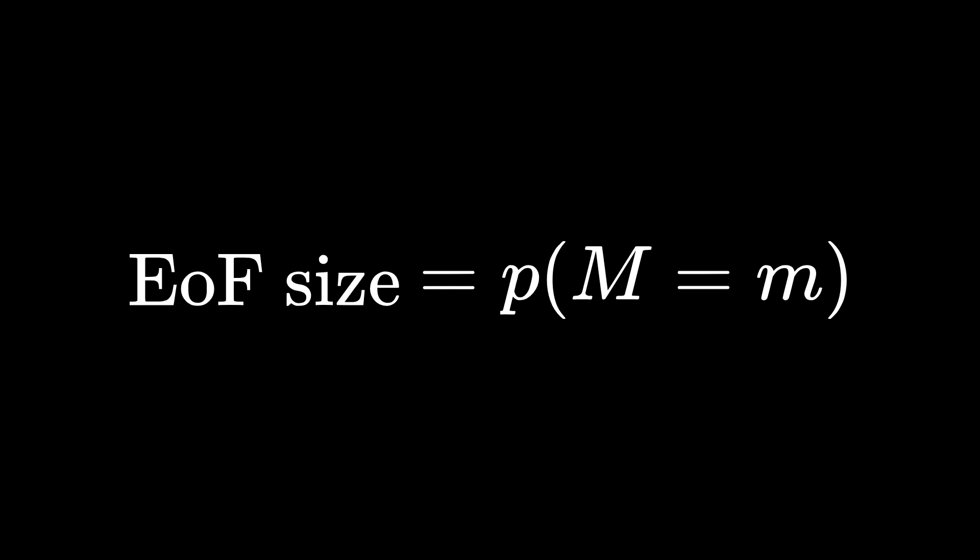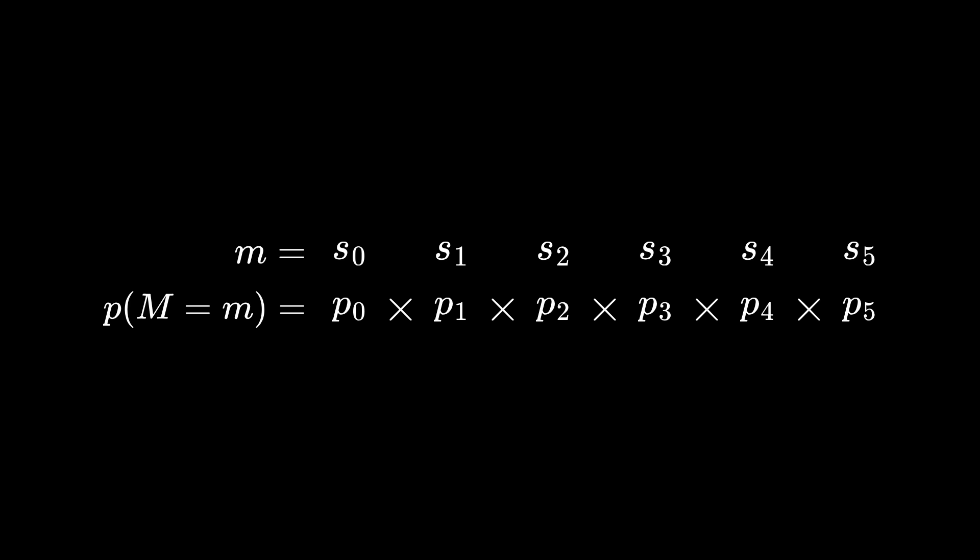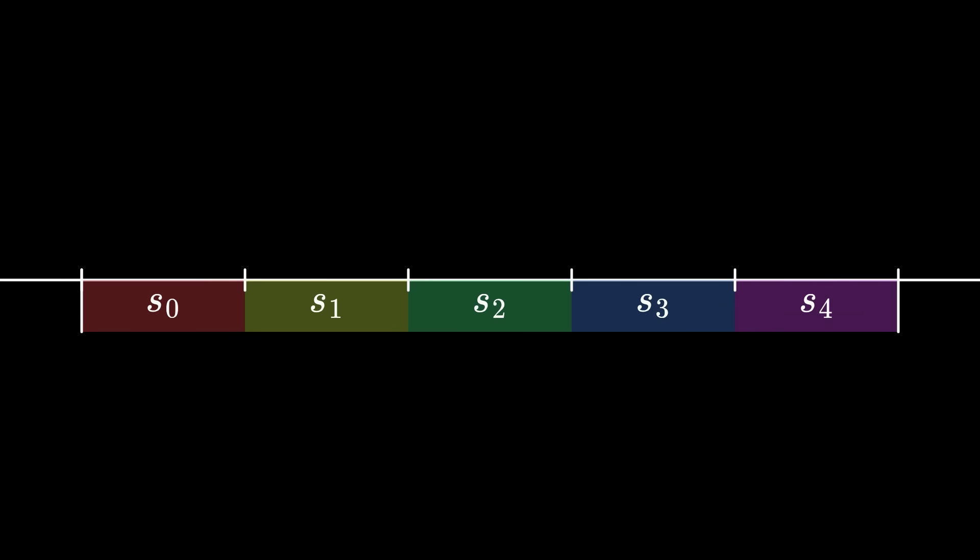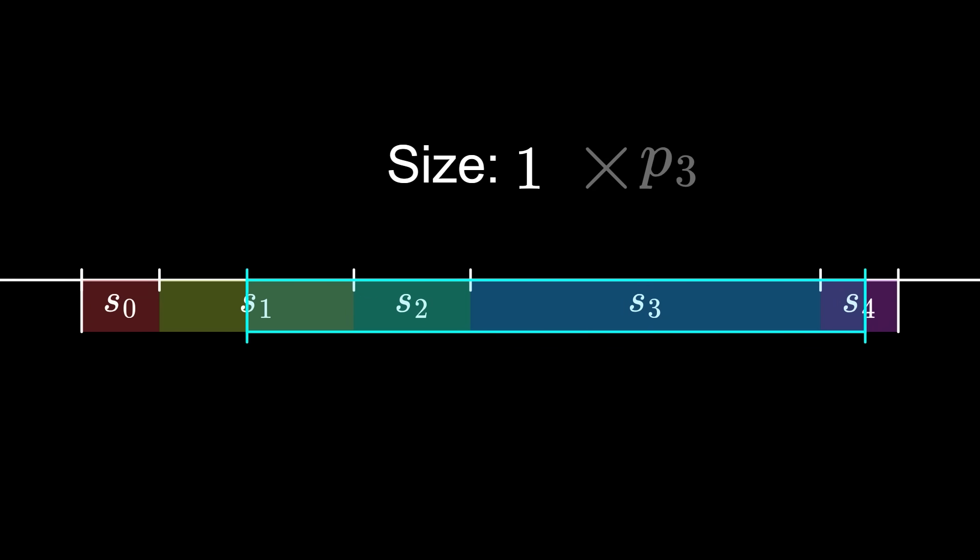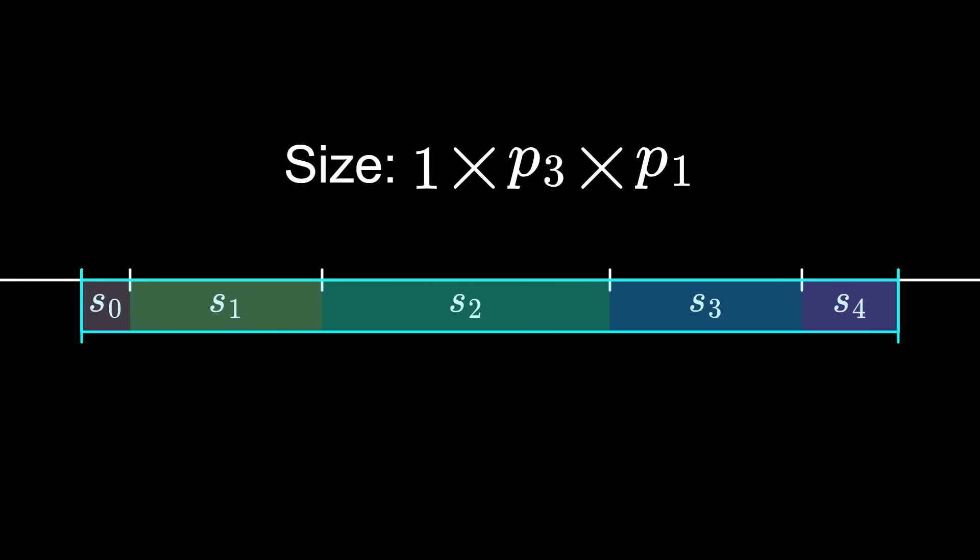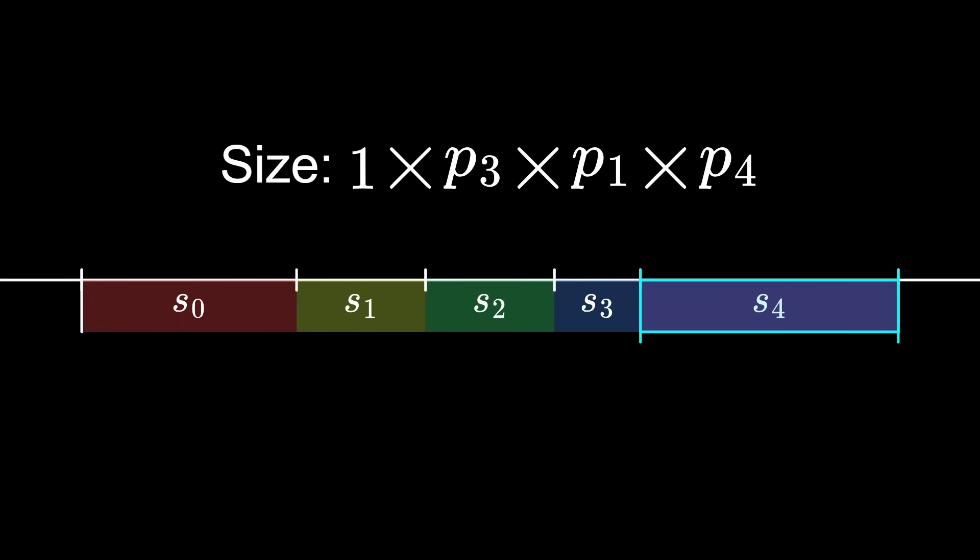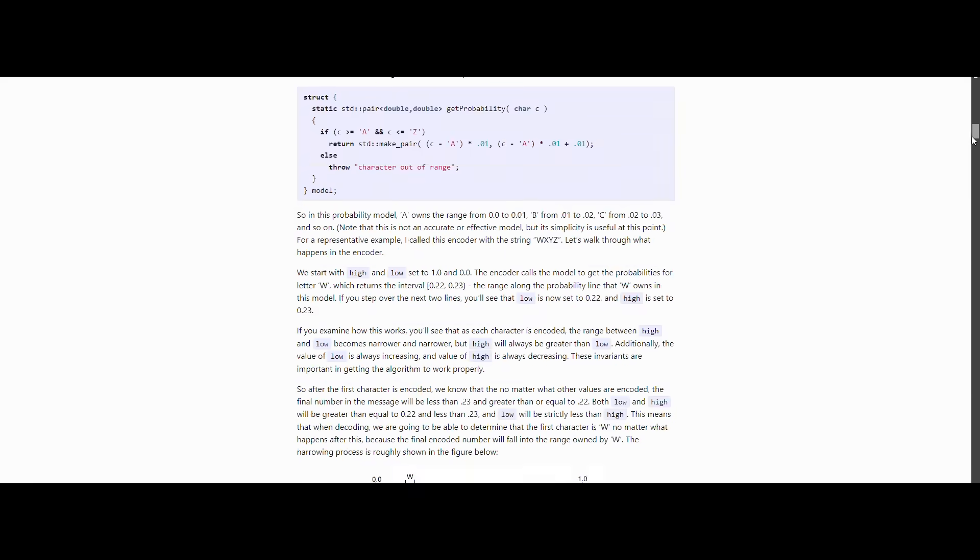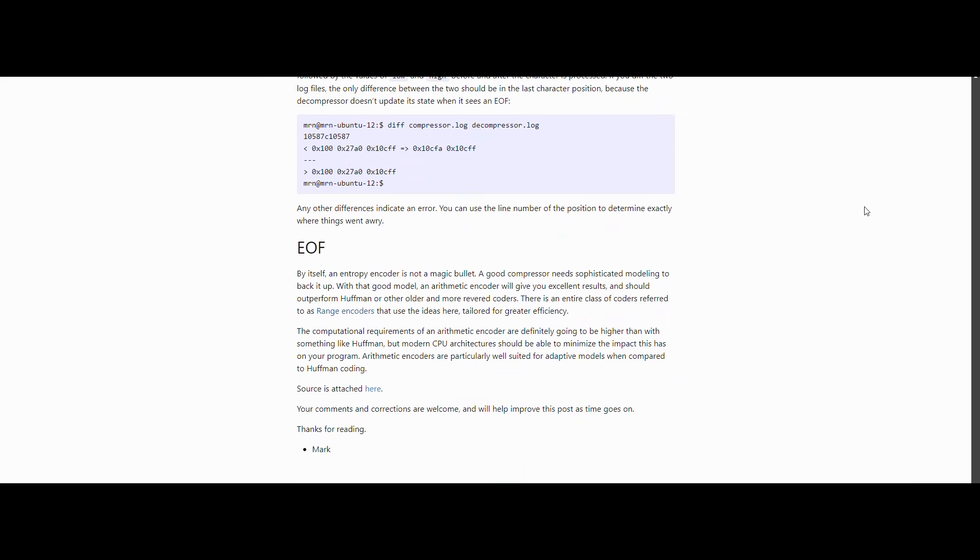Because the probability of the message is just the product of the probabilities of its symbols, all we need to do is make the subsection size for each symbol proportional to the symbol's probability. Each symbol you choose will then multiply the size of the range by the probability. This also lets you make your probabilities adaptive. The probabilities can update themselves based on previously seen symbols. As long as both the encoder and decoder agree with the probabilities at each step, the code will work. If you want to see a full implementation of an arithmetic encoder and decoder, I've linked to a nice explanation in the description.